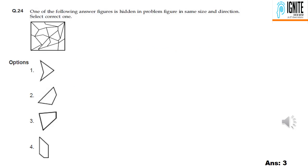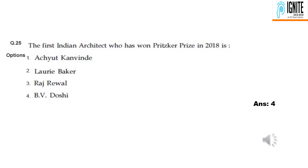Question 24: select option 2. Can you identify the hidden square shape? Option 1, then option 3. Question 25: which Indian architect won the Pritzker Prize in 2018? Option 4 — B.V. Doshi.